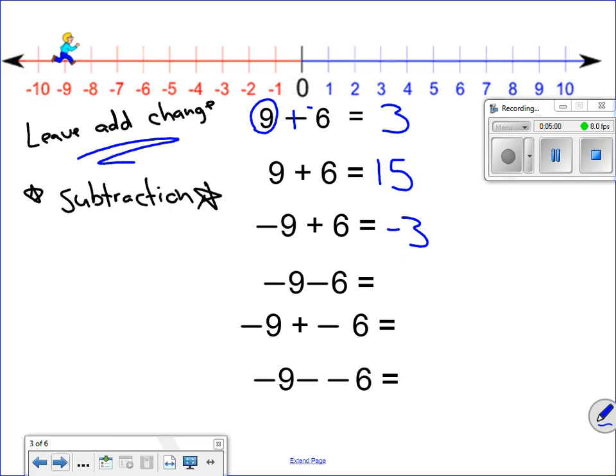Negative 9 minus 6. Leave, add, change. I'm going to keep my negative 9. I'm going to change my subtraction to adding. I'm going to change this positive 6 to a negative. Now take a look. I have a negative 9 plus a negative 6, so negative and a negative makes a big negative number, which would be a negative 15.